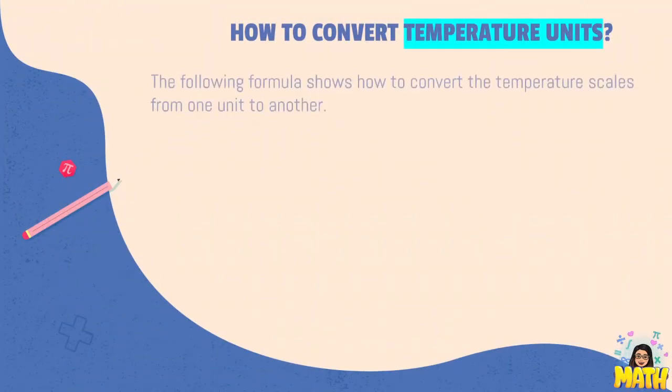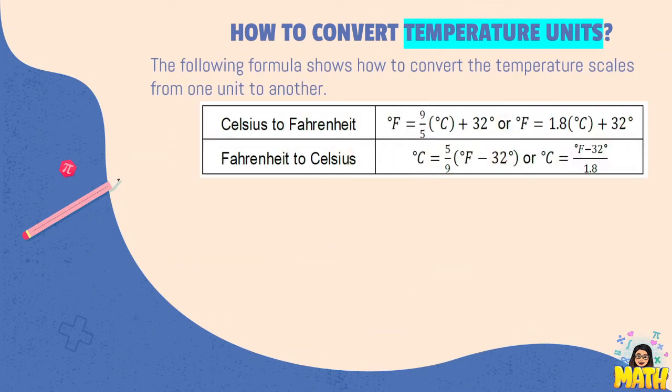So how do we convert temperature units? Here we have the following formula that shows how to convert the temperature scales from one unit to another. So the first one, let's convert 40 degrees Celsius to degrees Fahrenheit. So here we just need to use the formula to be able to convert this into Fahrenheit. I prefer to use the one with the fraction.